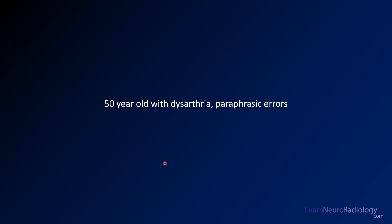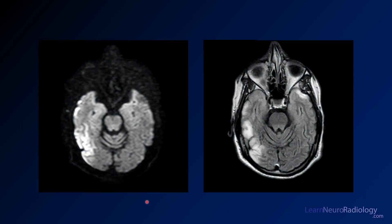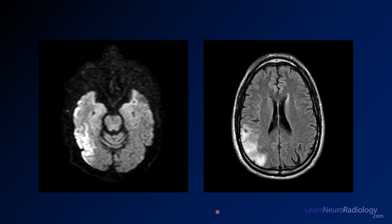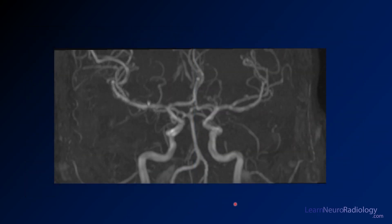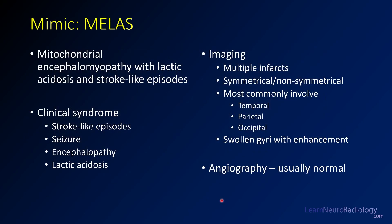There's one more case — a 50-year-old presenting with dysarthria and paraphasic errors. On diffusion-weighted imaging, there's diffusion abnormality in the lateral temporal lobe with associated FLAIR signal change, and some involvement of the left temporal pole. Higher up, there's more FLAIR abnormality. Additional FLAIR images show the temporal lobes are affected in the superficial white matter near the cortical surface. An MRA looks pretty normal, with no large vessel occlusion to explain all of that abnormality.